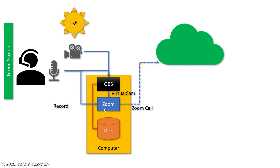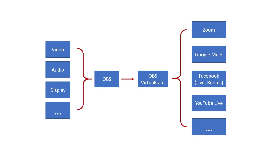OBS also records just like Zoom does, but OBS records in high definition. So whenever I record, I record with both — Zoom gives me the overall picture including other participants, while OBS only captures what's being recorded locally with my camera. On the sources side, you can have video capture devices, audio capture or a microphone, different displays, window captures, images, videos, logos with transparent backgrounds — all of these are sources that can be stacked on top of each other.